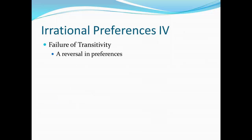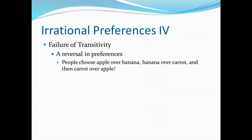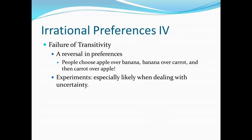A last type of irrational preference is the failure of transitivity — a reversal in preferences. Sometimes people choose an apple over a banana, then given the choice between a banana and a carrot, they take the banana. So we'd think they should choose the apple over the carrot, but then given that choice, they pick the carrot. Their preferences have reversed. In experiments, we find this is especially likely when dealing with uncertainty — say, people valuing different lottery tickets. When asked to choose between them, they often reverse the order in which they originally valued them. In the lab, people do have reversals in preferences, which is not predicted by the mainstream notion of rationality.